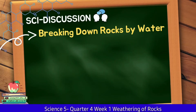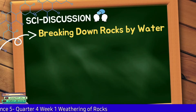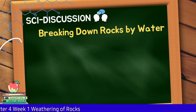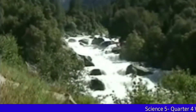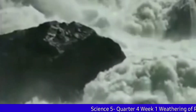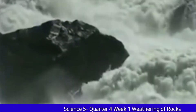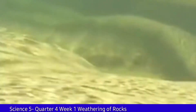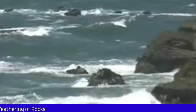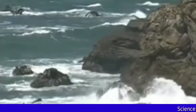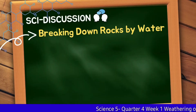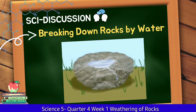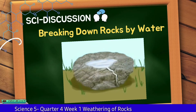Breaking down of rocks by water: Water can break rocks in different ways. The strong waves hitting the rocks can make them break. Water can seep into the cracks of the rocks. When it gets colder, this water can expand and turn into ice. This can trigger rocks to break as well.